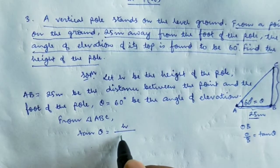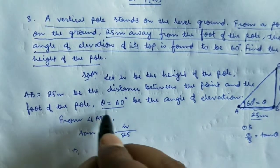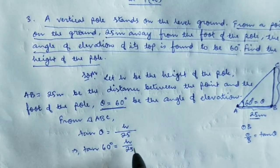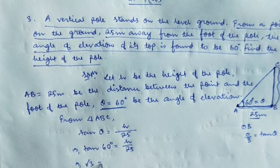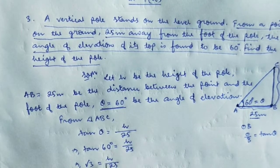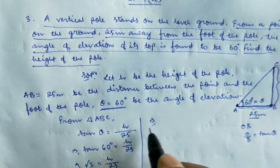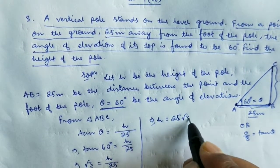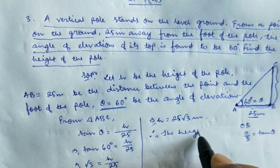So tan theta equals H divided by 25. Since theta is 60 degrees, tan 60° equals √3. Therefore, √3 equals H divided by 25. Cross-multiplying, H equals 25√3. This is the height of the pole.